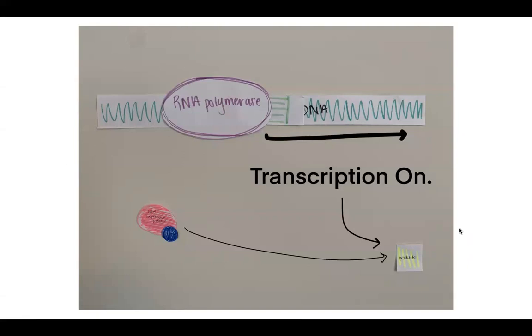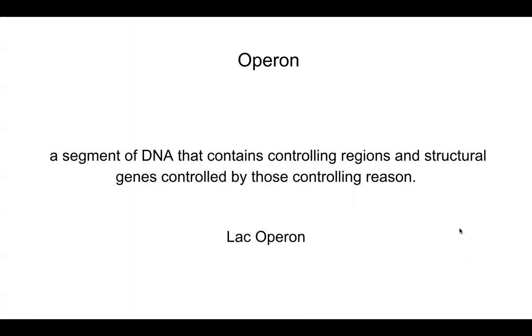I also want to explain what an operon is. An operon is a segment of DNA that contains controlling regions and the structural genes controlled by those controlling regions. In your case, you have a lac operon. It's usually turned off unless a small molecule binds to it to allow transcription to occur, as I told you earlier.